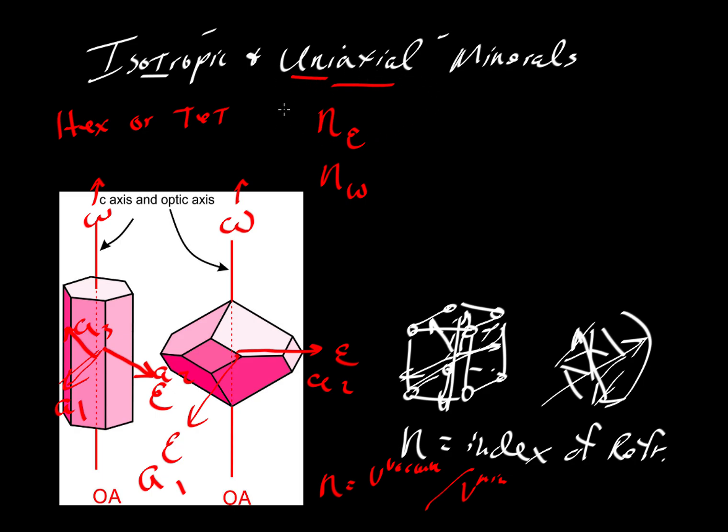We call them uniaxial because they have a single optic axis. And that optic axis is a case that when you look down in this direction, all you see are the a values. And so everything is the same.